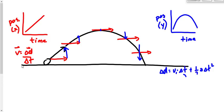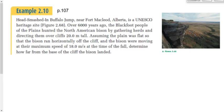Now it's time to do a problem. This is chapter 2, section 2.10 in your textbook, page 107. Head-Smashed-In Buffalo Jump near Fort McLeod, Alberta is a UNESCO heritage site. Over 6,000 years ago the Blackfoot people of the plains hunted North American bison by gathering herds and directing them over cliffs 20 meters tall. Has anyone been there? You should all go — it's not that far away and it's neat.